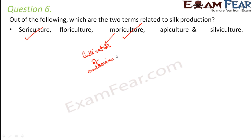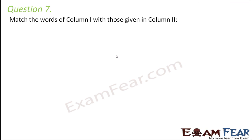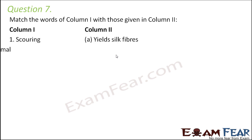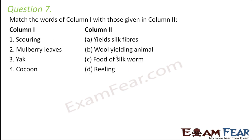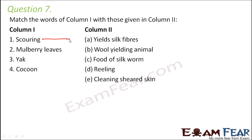Question number 7: match column one with column two. The first one is scouring — it is the second step in the process of wool processing. During scouring, the wool obtained from animals is washed and cleaned properly to remove all the dirt and grease, so this matches with 'cleaning.' Mulberry leaves are the food for silkworms — a lot of silkworms feed on mulberry leaves.